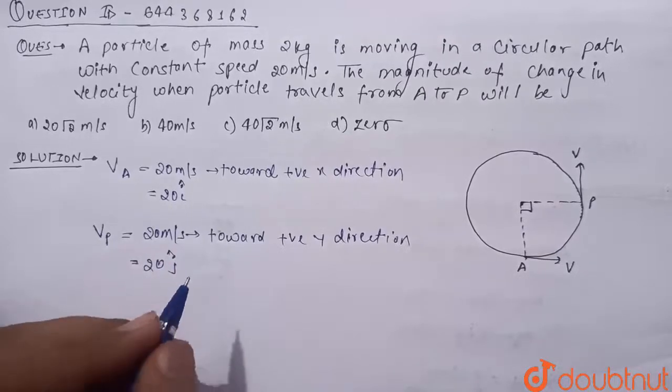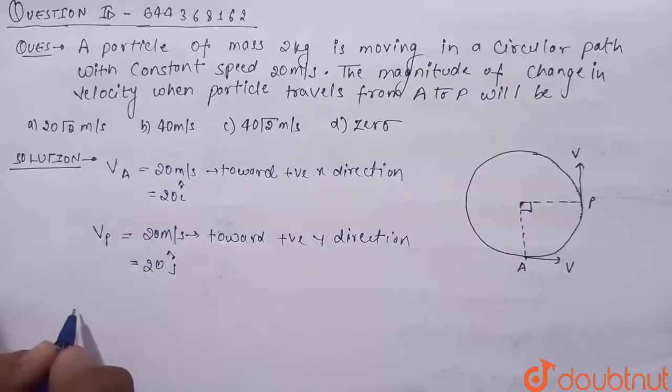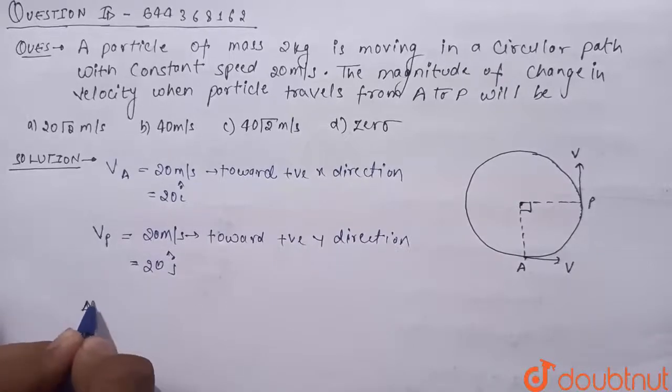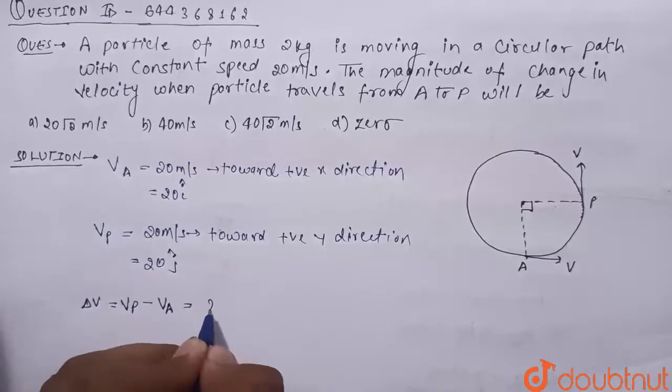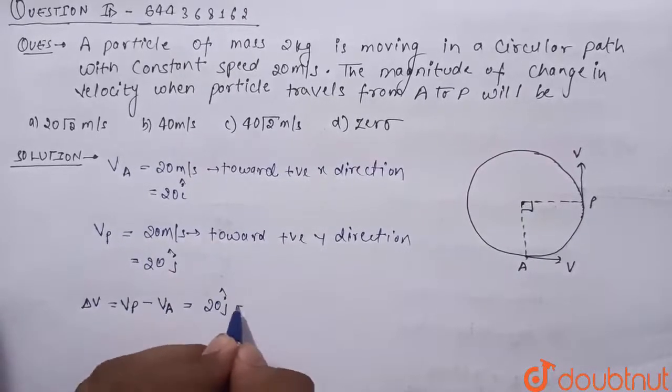Now we have to find the magnitude of change in velocity. So what will be firstly change in velocity, that is delta V? It will be Vp minus Va, that will be equal to 20j cap minus 20i cap.